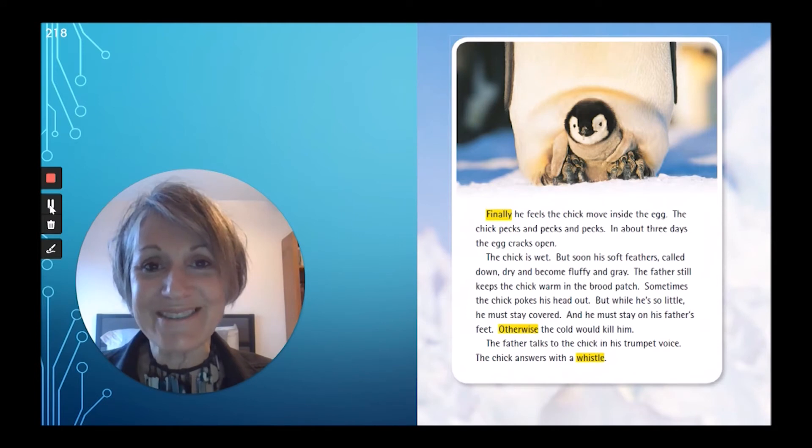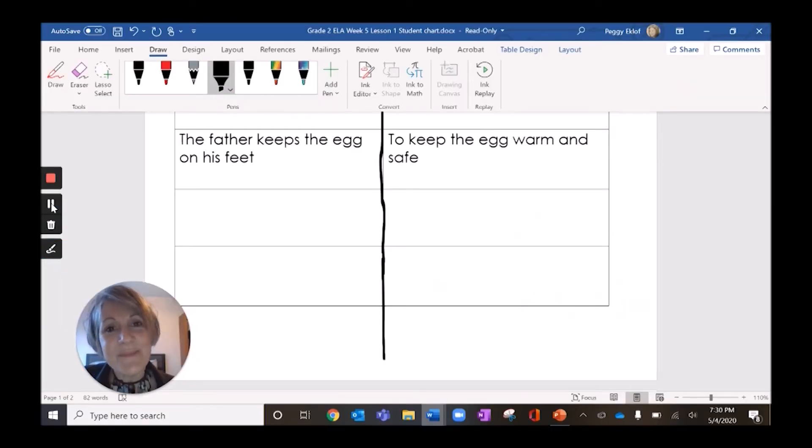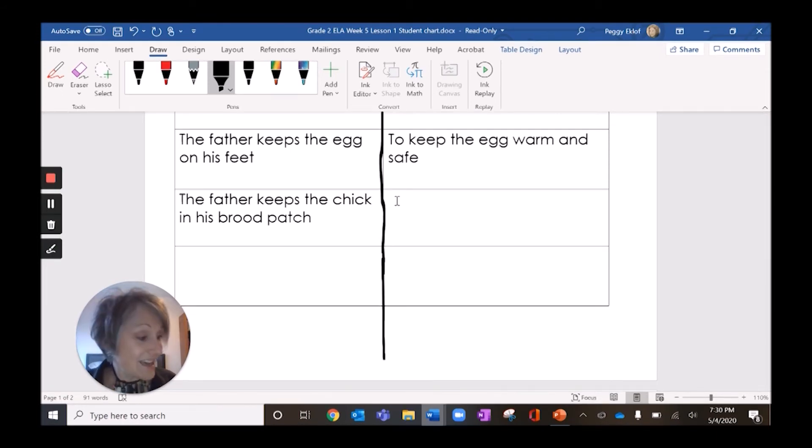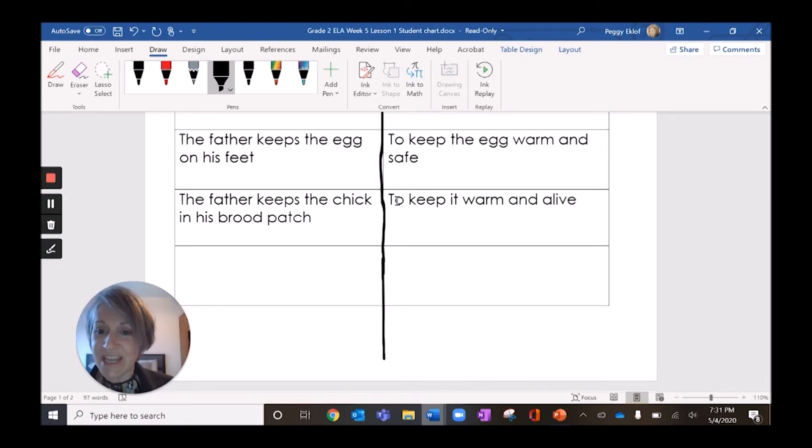Let's go back and record this on our graphic organizer. So what was the parent action here? The parent action was that the father keeps the chick in his brood patch. And remember we read earlier where that was like that special little pocket? Keeping the chick safe and warm like it's in a sleeping bag. And so the father is doing this to keep the chick warm and alive. That's the reason why. To keep it warm and alive. So let's look at that one more time. The parent action is the father keeps the chick in his brood patch. And the reason why is to keep the chick warm and alive.